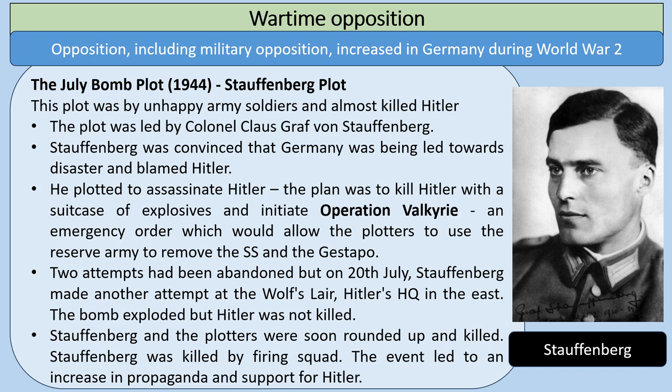The July bomb plot in 1944, often known as the Stauffenberg plot, was a plot by unhappy army soldiers that almost killed Hitler. The plot was led by Colonel Klaus Graf von Stauffenberg, who was convinced that Germany was being led towards disaster and blamed Hitler for this. The plan was to kill Hitler with a suitcase of explosives and initiate Operation Valkyrie — an emergency order which would allow the plotters to use the reserve army to remove the SS and the Gestapo. On the 20th of July, Stauffenberg made an attempt at Hitler's headquarters, the Wolf's Lair. The bomb exploded, but Hitler was protected by a pillar and a table leg. Stauffenberg and the plotters were soon rounded up and killed, and the event actually led to an increase in propaganda and support for Hitler.